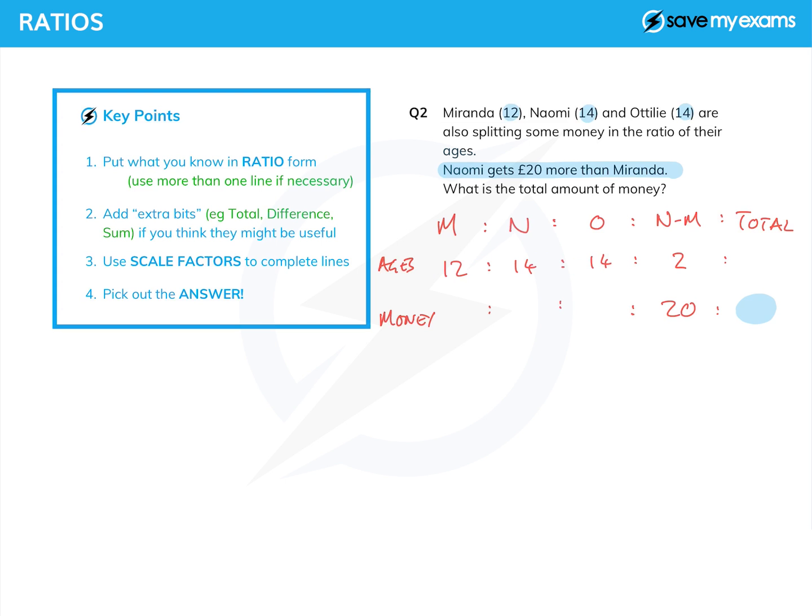So we can fill in those two pieces of information, and now it's actually very straightforward, having laid it out clearly, to find the scale factor from 2 to 20, which is 20 over 2, or if you like, 10. And so we can just multiply the 40 by 10 as well, and we can see that the total amount of money is 400.